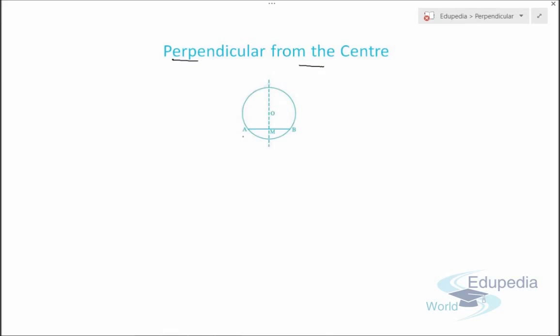Let's say we have a circle with a chord AB. Suppose this is center O and we draw a perpendicular OM to the chord. We also join OA and OB, so these are radii. We can say that OA equals OB. This is the general concept of drawing a perpendicular to any chord from the center of a circle.